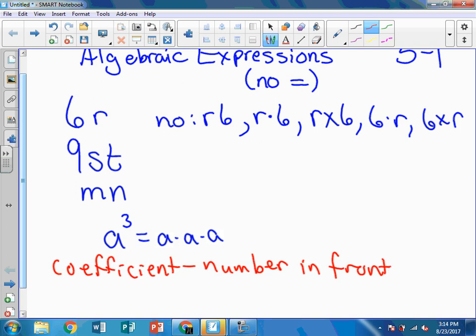So when I look up here at these expressions, 6 times R, 6R. The coefficient is 6. When I look at the next one, 9 times S times T, 9 is the coefficient. Now it gets a little confusing. I have MN. There's no number in front of there. So what is the coefficient?